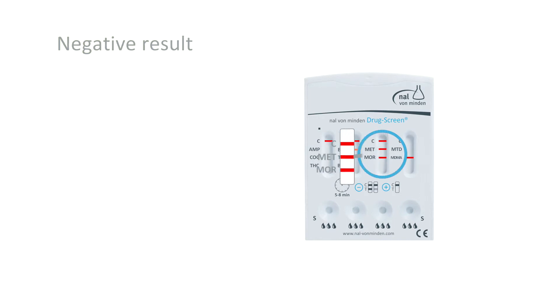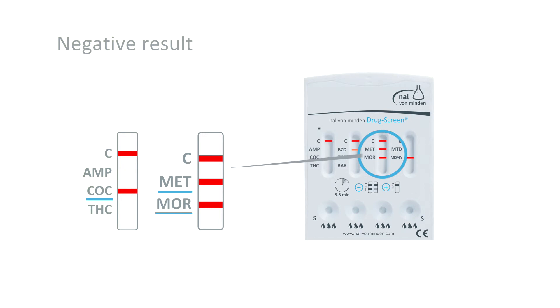A line in the test line region indicates a negative result. Again, a control line signifies that the test has performed correctly and should always be present.